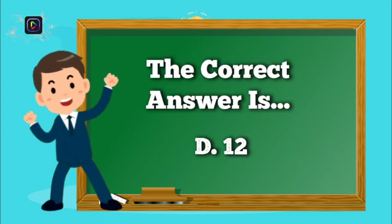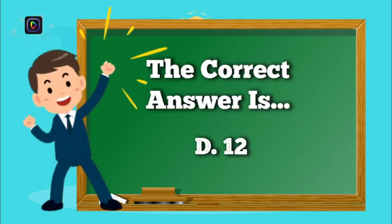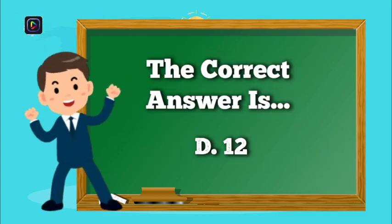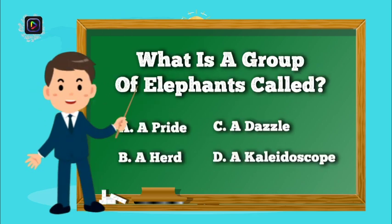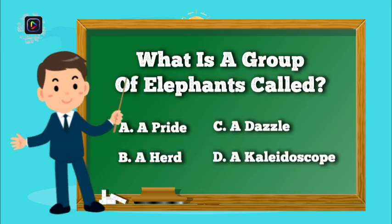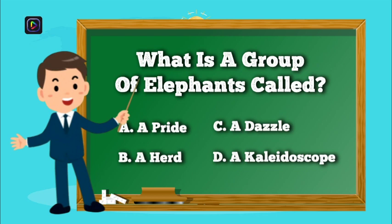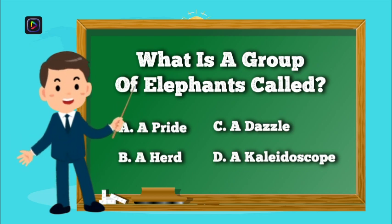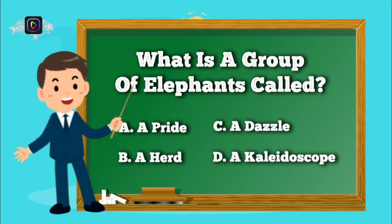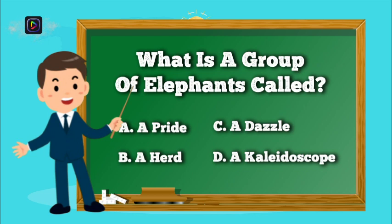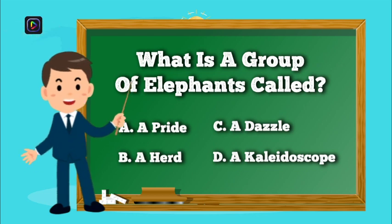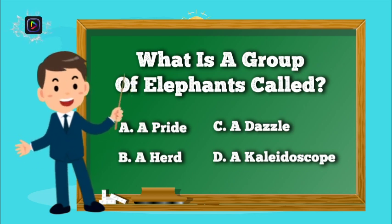The correct answer is D, 12. Question number 7. What is a group of elephants called? Is it A, A Pride? B, A Herd? C, A Dazzle? Or D, A Kaleidoscope?